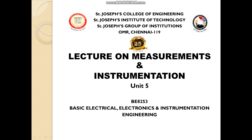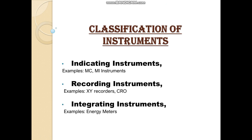In this lecture, let us cover the second half of the unit: measurements and instrumentation. Before getting into the classification, we need to know what instruments are. Measurements involve the use of instruments as a physical means of determining quantities or any kind of variable. Generally, instruments can be classified into two categories: absolute measurements and secondary instruments.